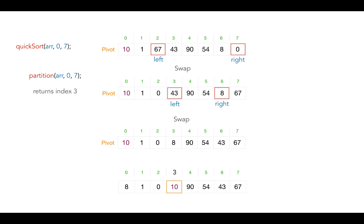We conquer by recursively performing partitioning of the sub-arrays. Here you can see the first array is from index 0 to 2 and the second partition is from index 4 to 7.